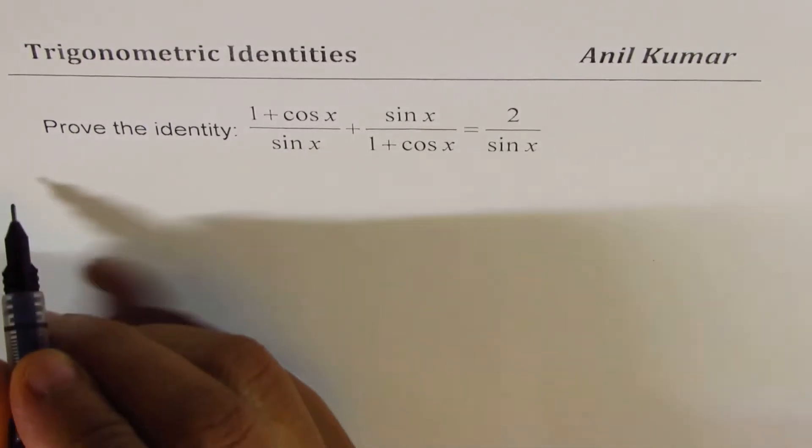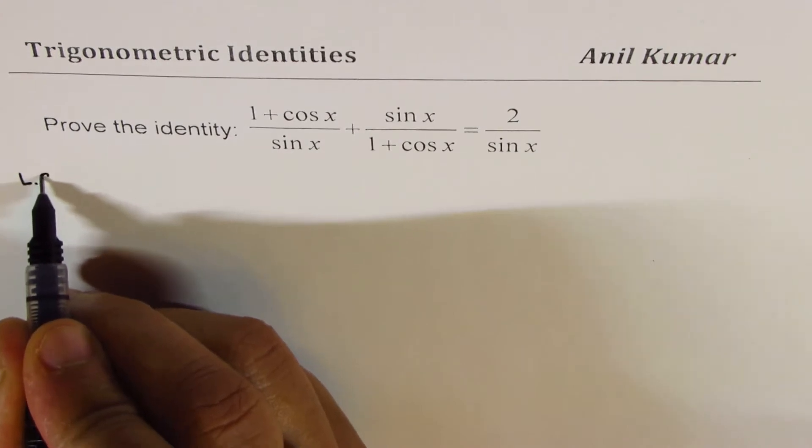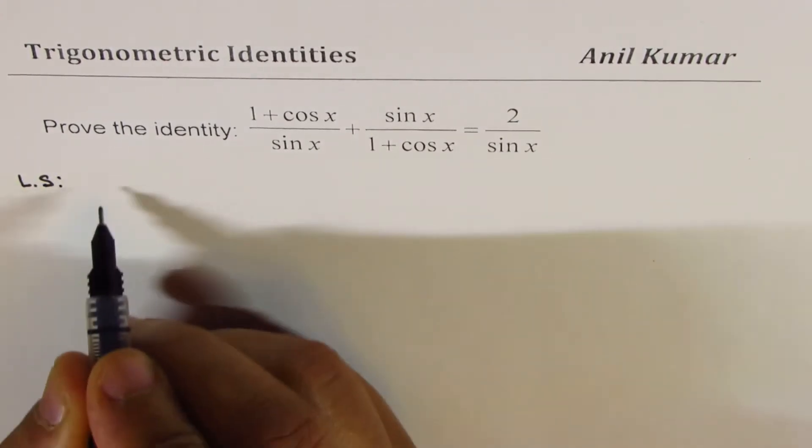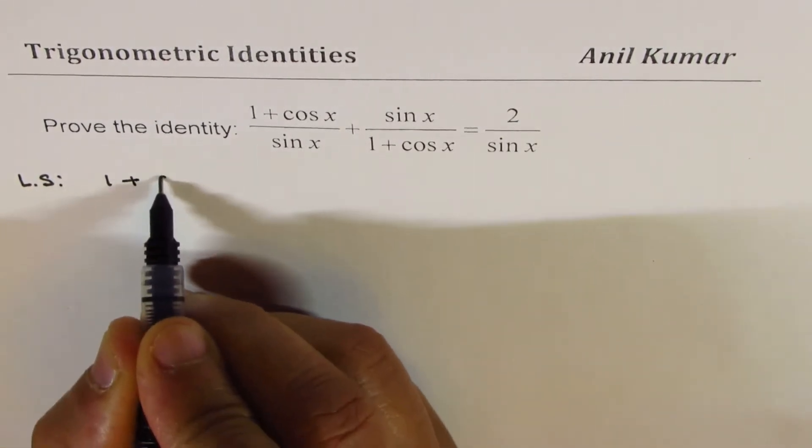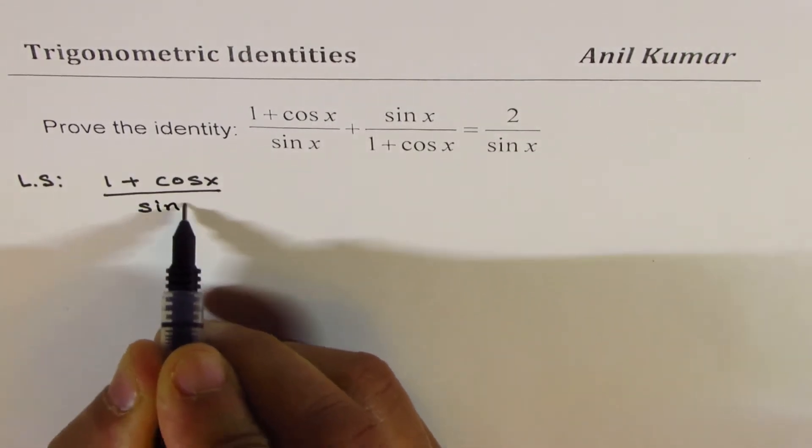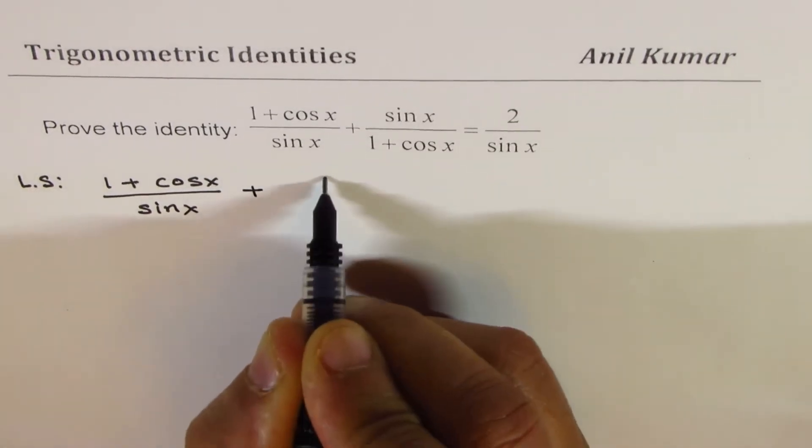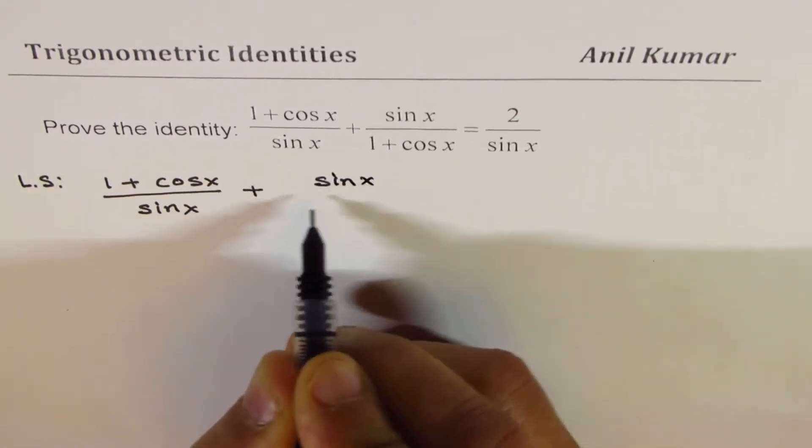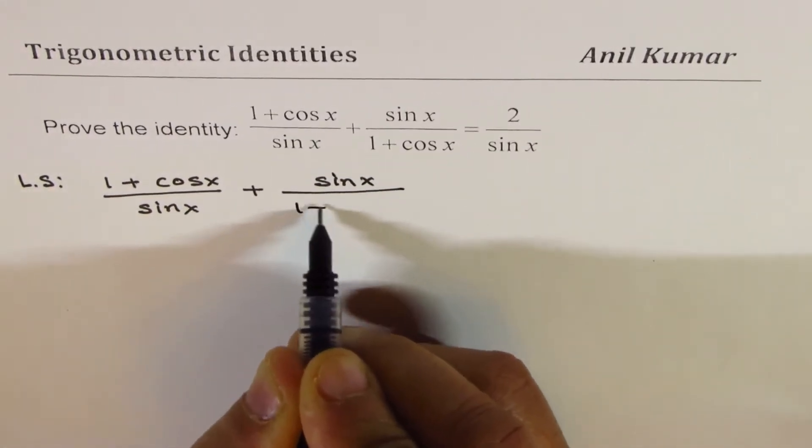Since left side is more complicated, let us begin with the left side. The left side is 1 plus cos x divided by sin x plus sin x divided by 1 plus cos x.